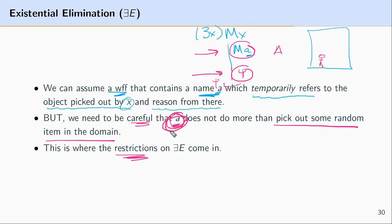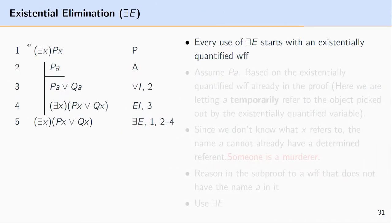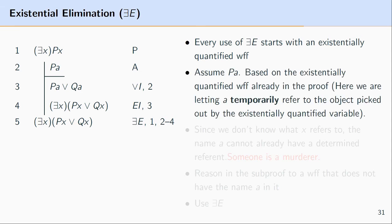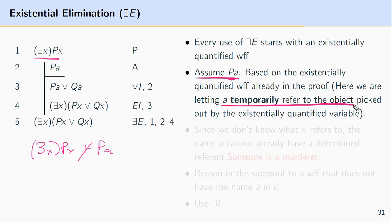Let's walk through an example. Every use of existential elimination starts with an existentially quantified expression. At line 1, you have ∃xPx. We can't reason directly from ∃xPx to PA. Instead, we make use of an assumption built upon that existentially quantified expression — here we assume PA. We're letting A temporarily refer to the object picked out by the existentially quantified variable at line 1. There are restrictions on which name we can pick: we can't pick a name whose object we already know the identity of. We need a name that is foreign or new, not already found in an active part of the proof.